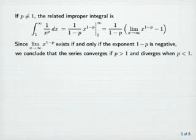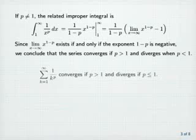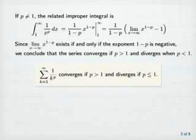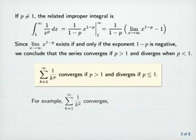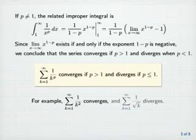We already know that the series diverges when p equals 1, and so a p-series — the sum from k equals 1 to infinity of 1 over k to the p — converges if p is greater than 1 and diverges if p is less than or equal to 1. For example, the sum from k equals 1 to infinity of 1 over k squared converges, and the sum from k equals 1 to infinity of 1 over the square root of k diverges.